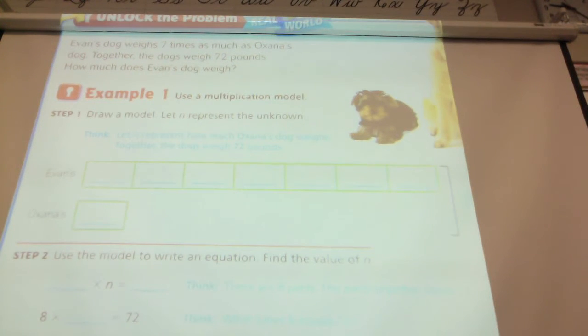Evan's dog weighs 7 times as much as Zana's dog. Together, the dogs weigh 72 pounds. How much does Evan's dog weigh? Now, they gave us a model here which makes it a lot easier. When you're doing this on your own, you're not going to get these models set up for you. You have to set them up for yourself.